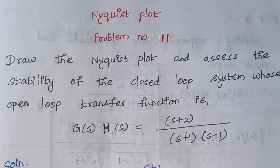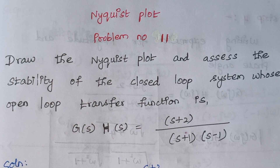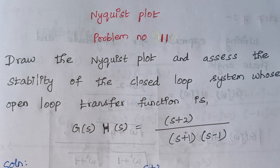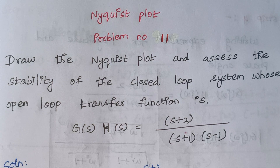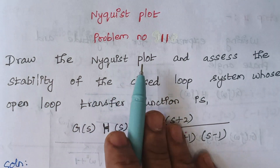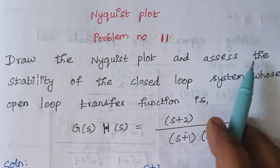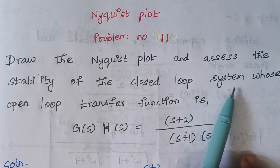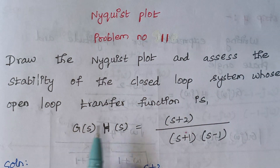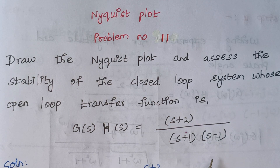Hello viewers, I am Kousalya. Today we are going to solve problem number 11 under the topic Nyquist plot. Before we start, it will be better if we go through the procedure of how to solve a problem using Nyquist plot — I will give the link in the description. The problem is: draw the Nyquist plot and assess the stability of the closed loop system whose open loop transfer function is given.